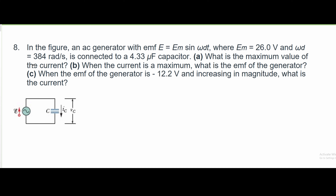For number 8, we're told that in the figure, an AC generator with EMF E equals the alternating EMF of sine omega-D T, where the alternating EMF is 26 volts, and omega-D is equal to 384 radians per second, and that is connected to a 4.33 microfarad capacitor.